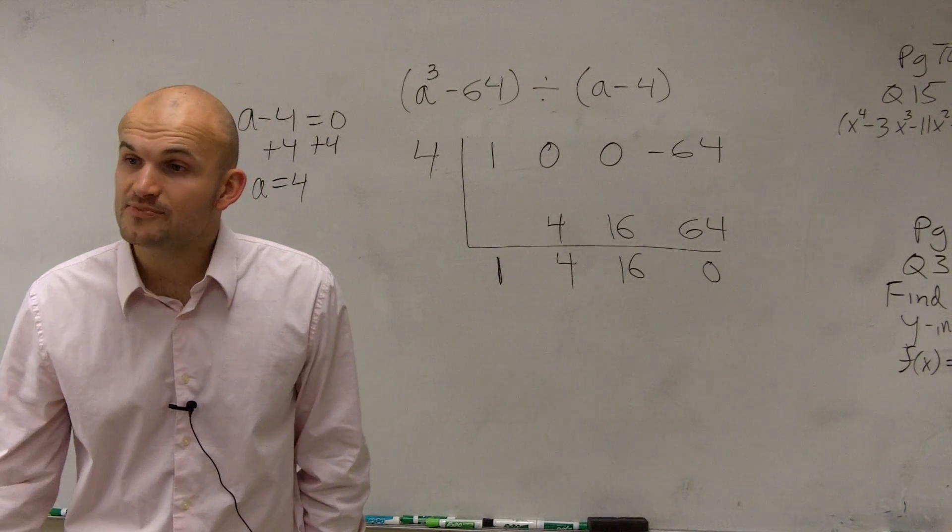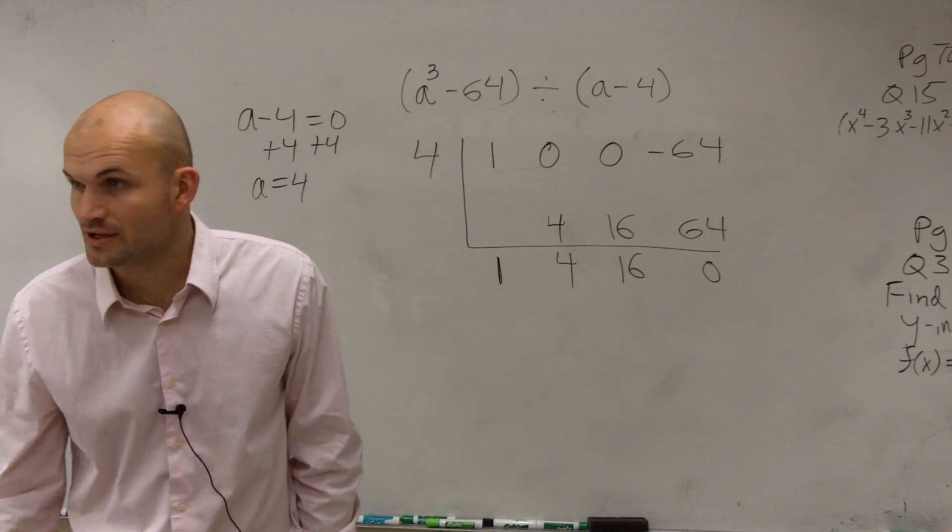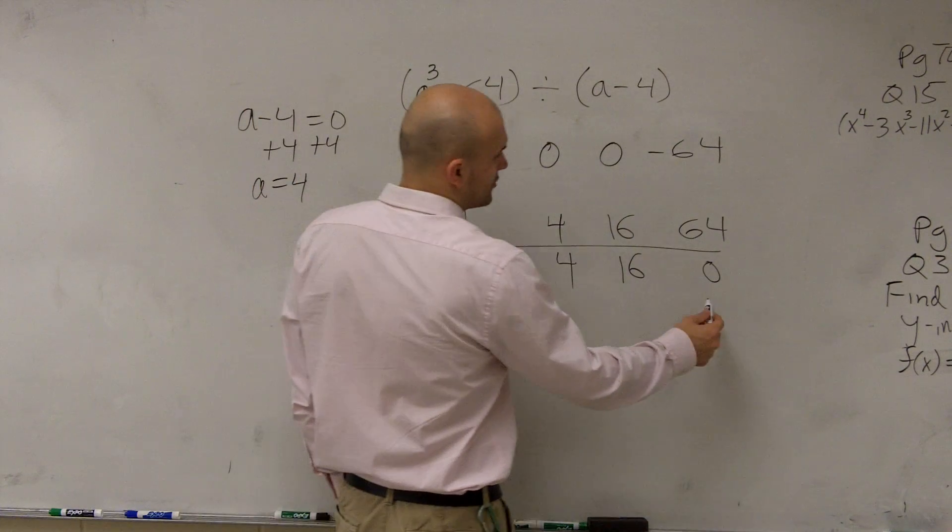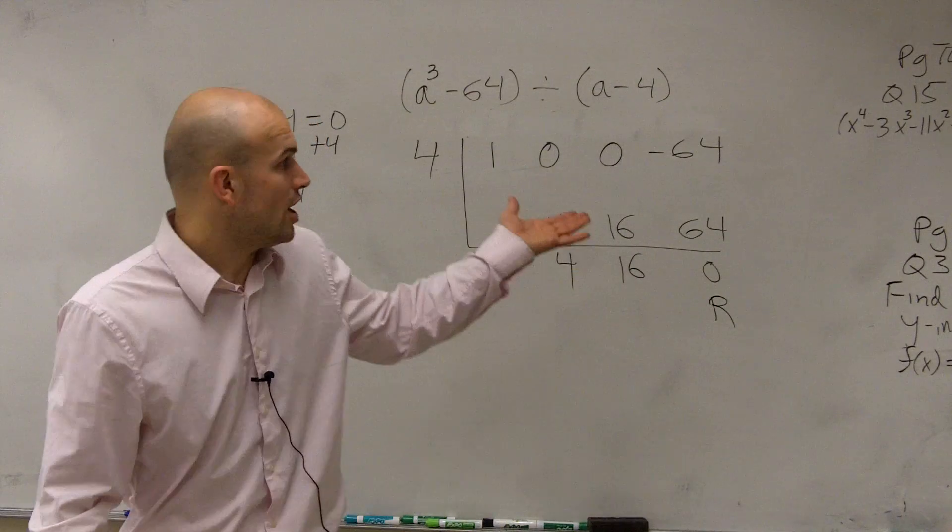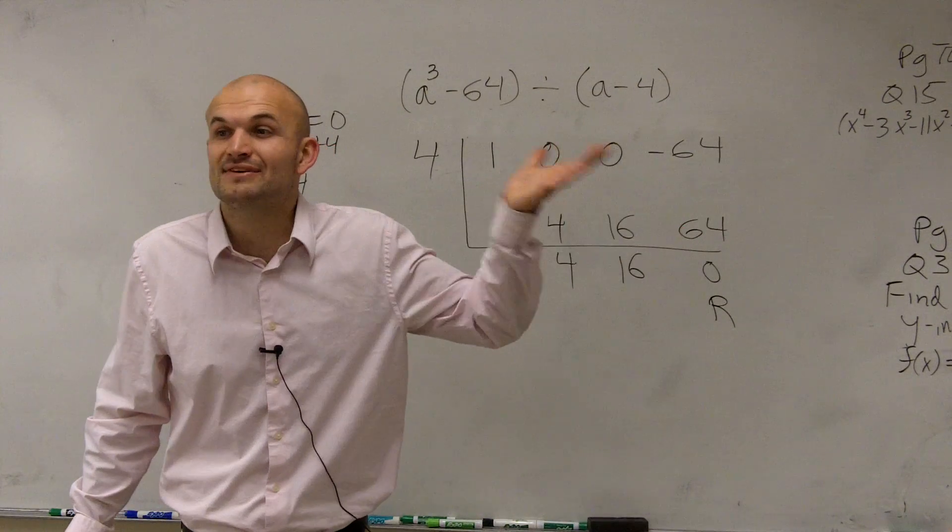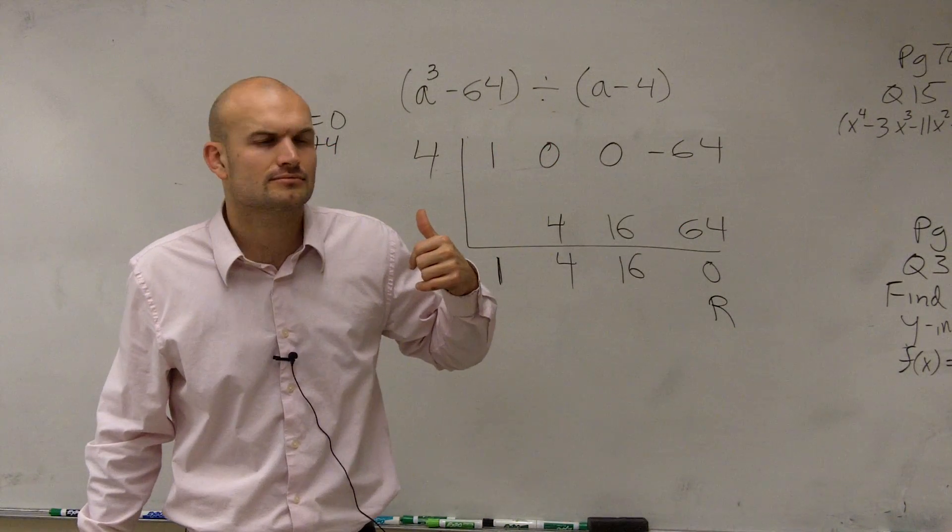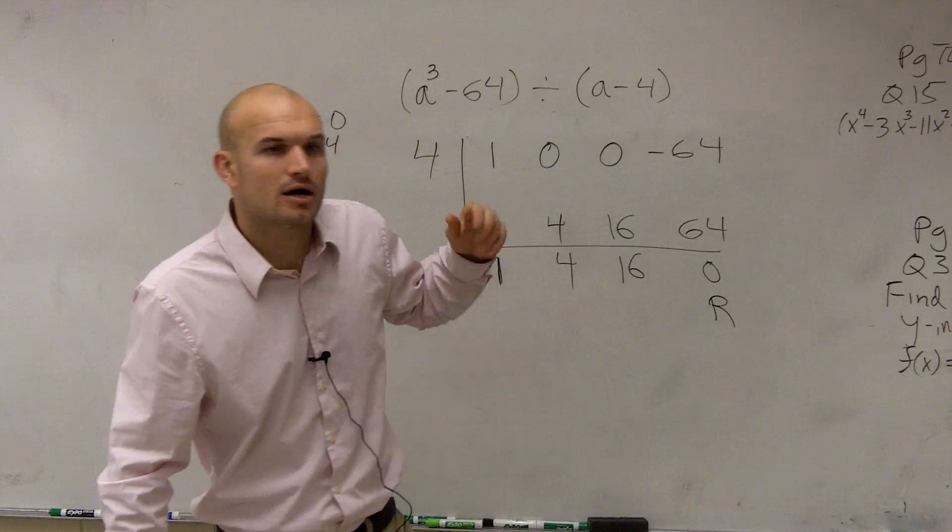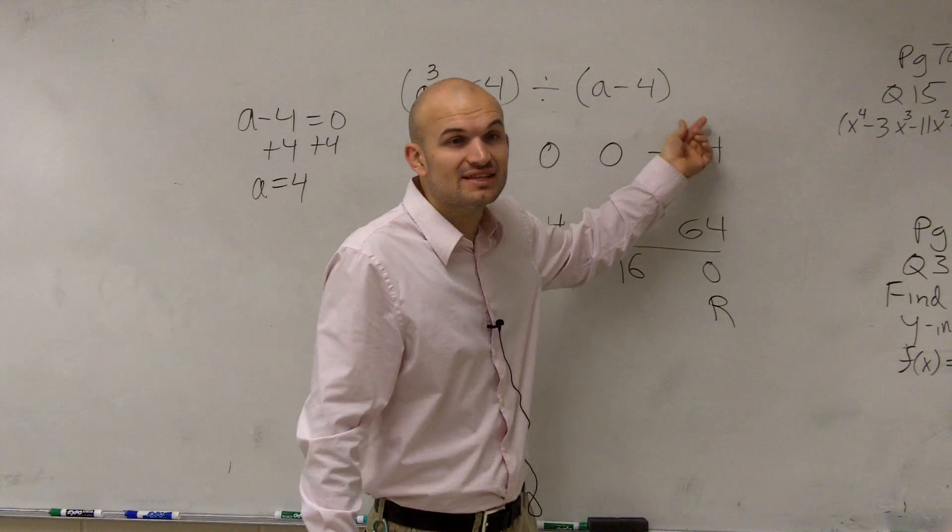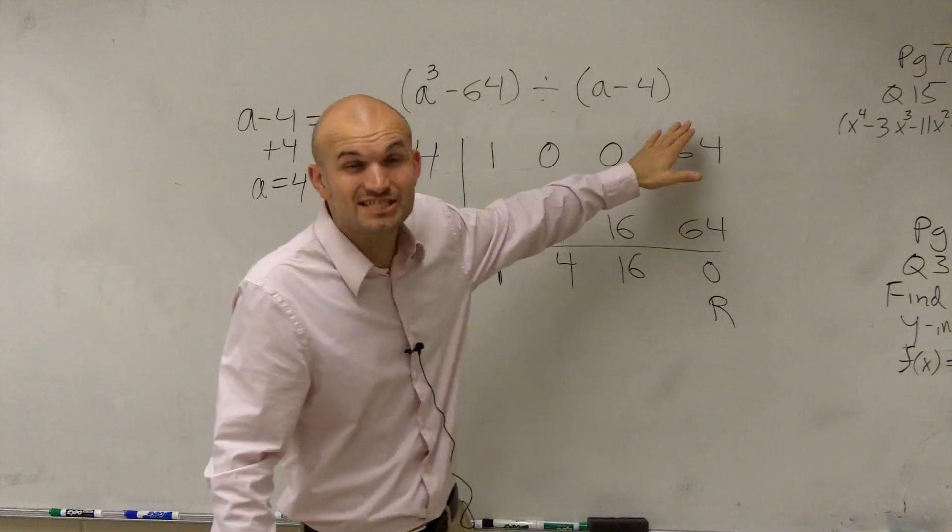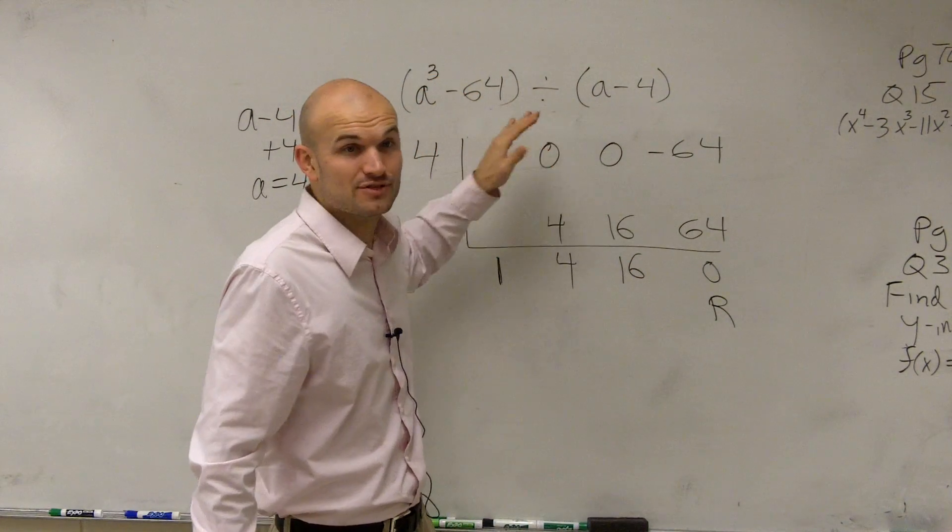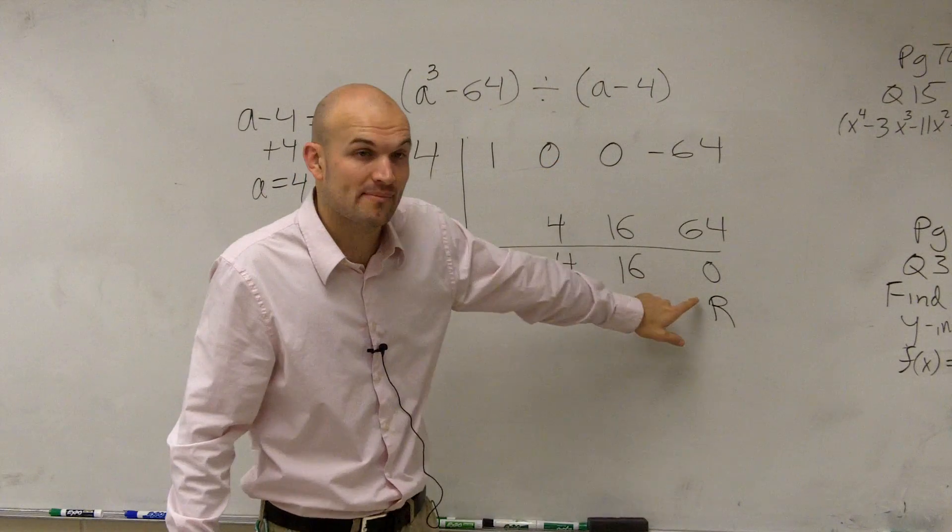Now, from this point, we need to make sure how we can write our answer. So remember, the last value is always going to be our remainder, which in this case we have a remainder of 0, meaning that our divisor, a minus 4, evenly divides into our dividend. Say it one more time. Our divisor evenly divides into our dividend because we have our remainder of 0.